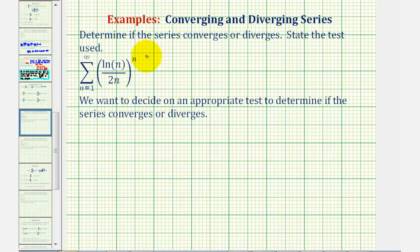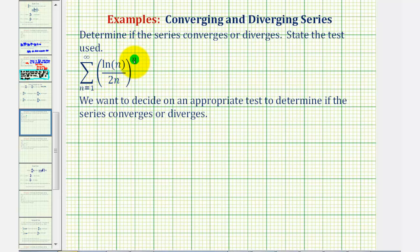We want to determine if the given infinite series converges or diverges. We start by determining an appropriate test. Looking at our series, notice how we have this fraction raised to the nth power, and because it's raised to the nth power, this should give us the hint that we should apply the root test.